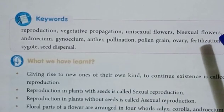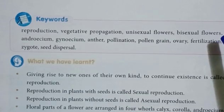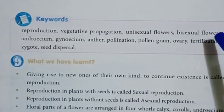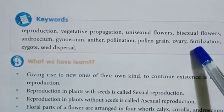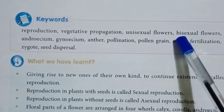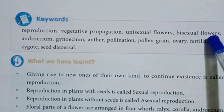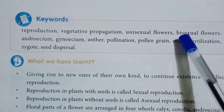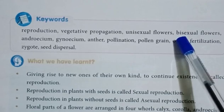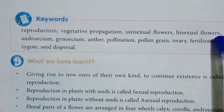Bisexual flowers are the flowers with both male and female reproductive parts. If a flower has two reproductive parts — both androsium and gynoseum — it is called a bisexual flower.